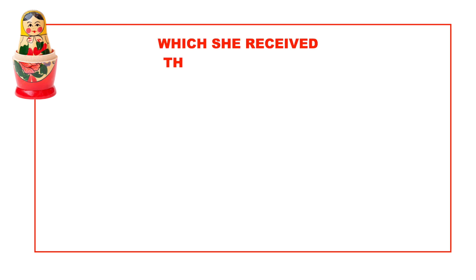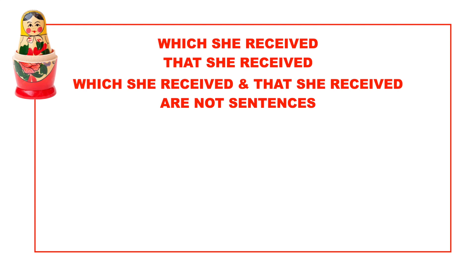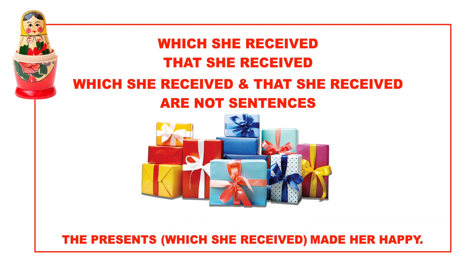The words which she received and that she received do not contain a fact and are not sentences. If you position the words which she received or that she received after a noun in an existing sentence, these words create an adjective clause that describes the noun. Which presence? The presence which she received.